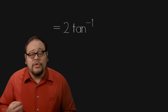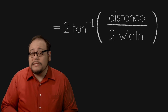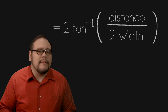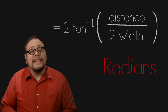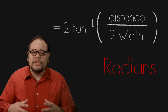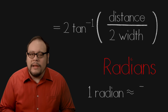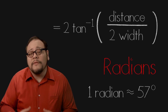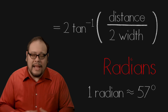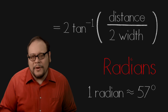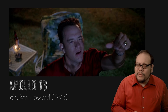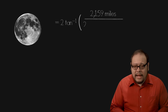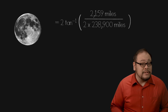The equation breaks down to 2 times the inverse tangent of the distance to the object divided by 2 times the width of the object. The resulting number is in radians — a whole circle is 2 pi, so each one unit radian is about 57 degrees. Using this equation we can determine the appearance of two objects at different distances and sizes. Let's use an extreme example from Apollo 13 where Jim Lovell, played by Tom Hanks, covers the moon with his thumb.